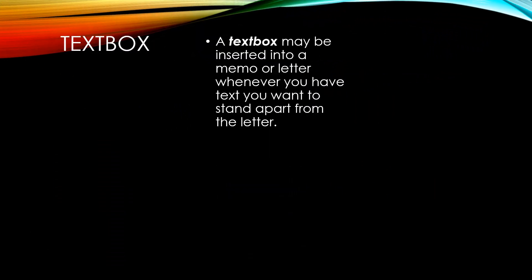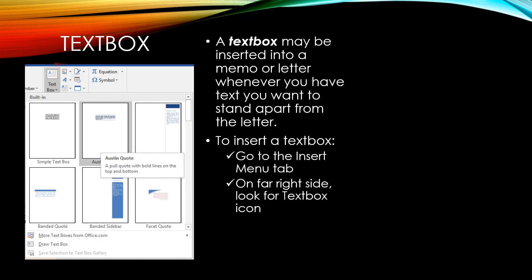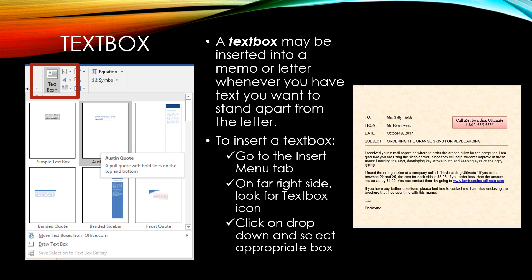Text box. A text box may be inserted into a memo or a letter whenever you have text you want to stand apart from the letter. To insert a text box, go to the Insert menu tab, and on the far right side look for the Text Box icon. Click on the drop down and then select the appropriate box. For example, a memo may include a text box with the company name and contact number so the customer can easily find their telephone number. This is a good example of using a text box in a memo or a letter.